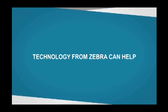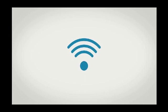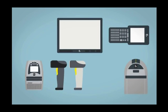But technology can help. Wi-Fi networks, RFID and barcode labels together with mobile computers, scanners and printers can help you see everything, everywhere, in real time.